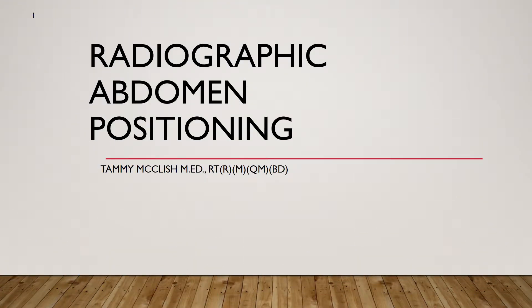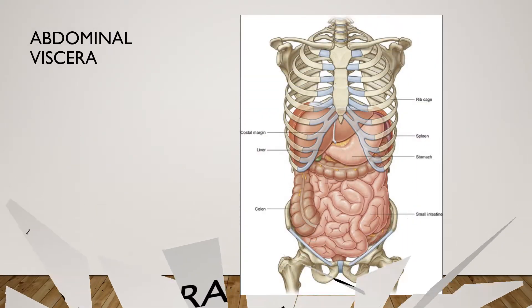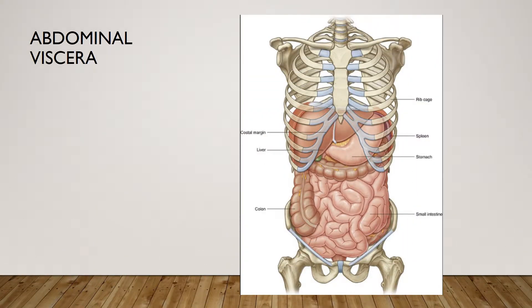Hi, this is Tammy McClish. Let's take a look at radiographic abdomen positioning. Now whenever you are x-raying the abdomen, keep in mind that you want to see all of the abdominal contents or the abdominal viscera. A lot of times a physician will order an AP flat plate, an AP supine abdomen, or just an abdomen x-ray.